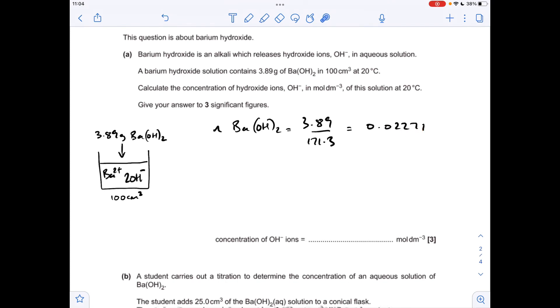So if we think about how this is dissolving, for each mole of barium hydroxide we've got, we get a mole of barium 2 plus ions, but importantly 2 moles of hydroxide ions. So the moles of hydroxide ions in the beaker is going to be 2 times that.